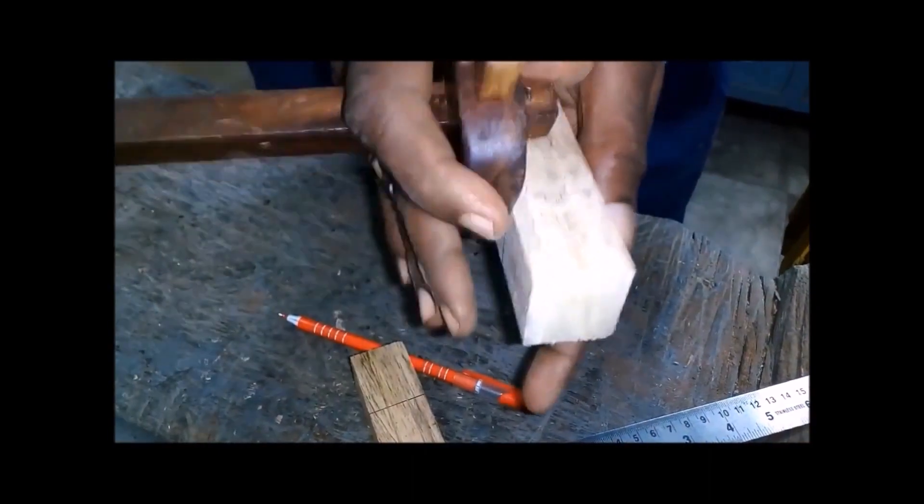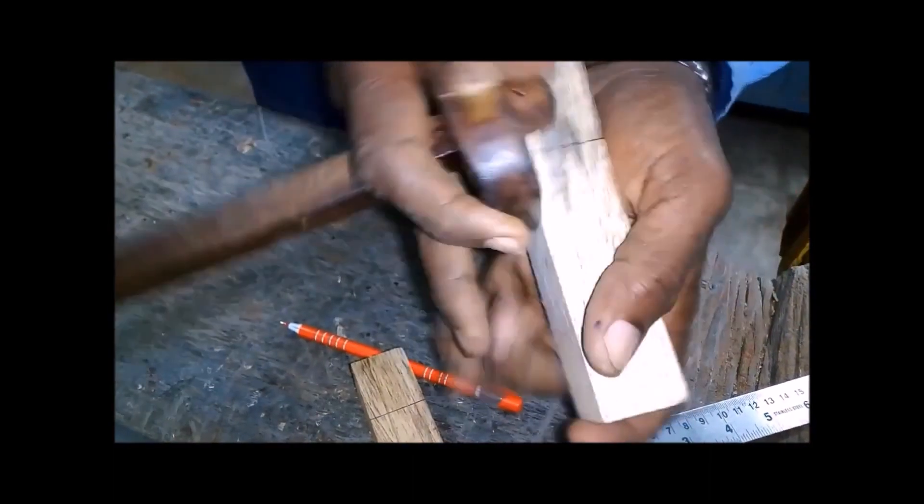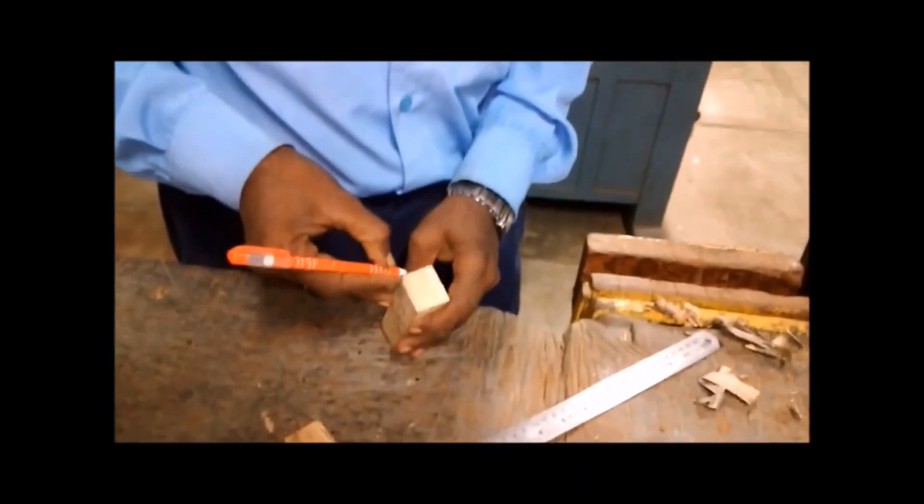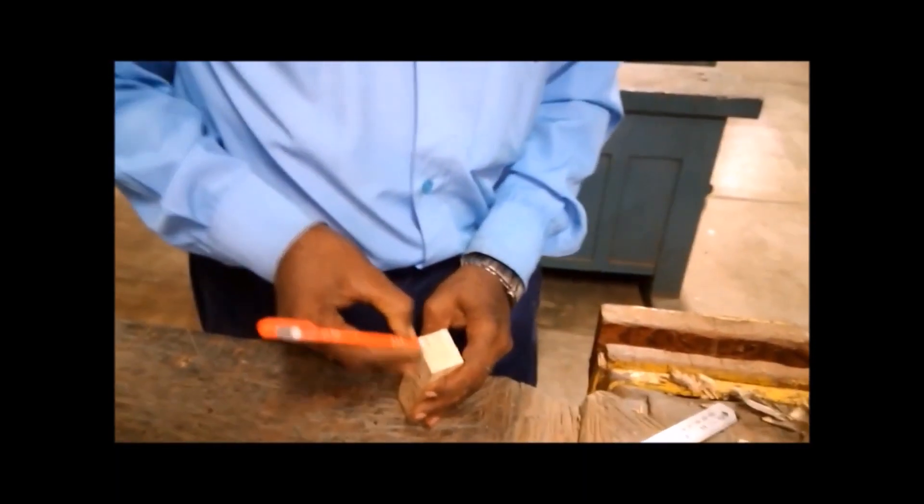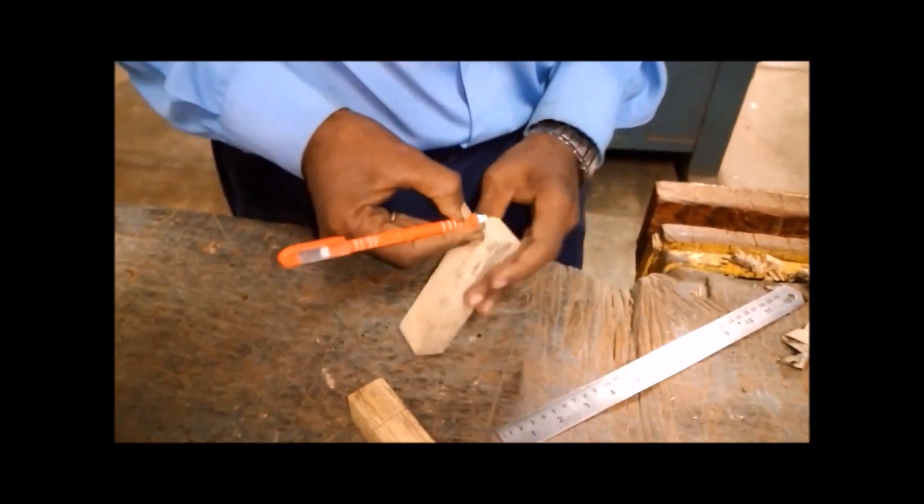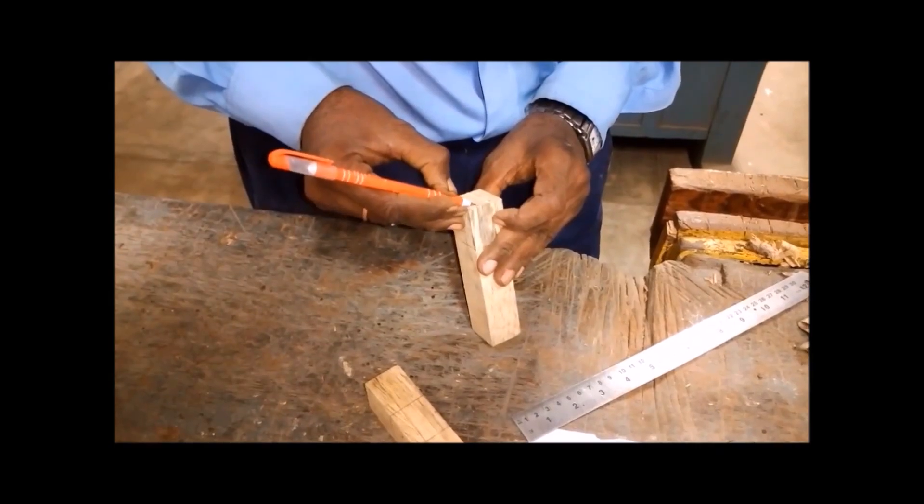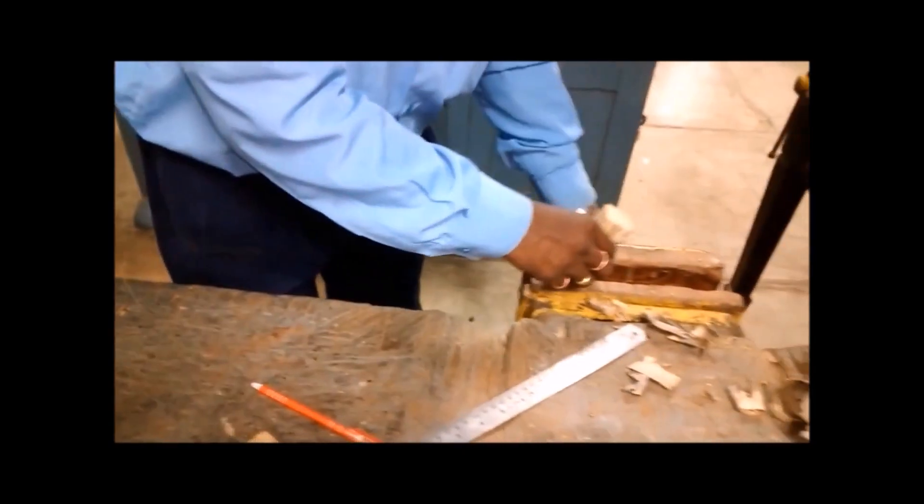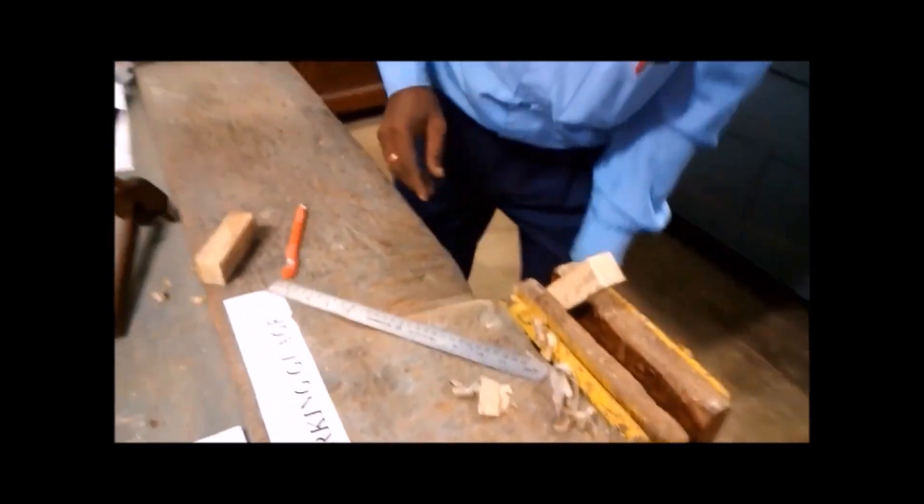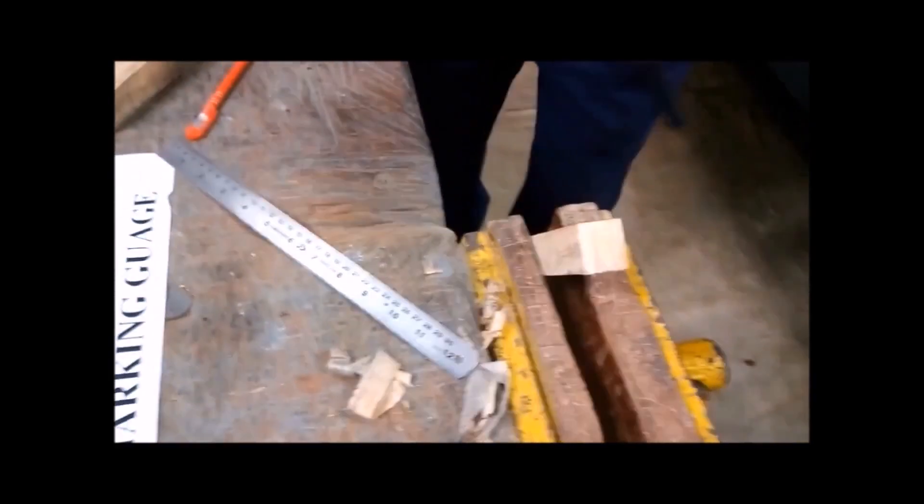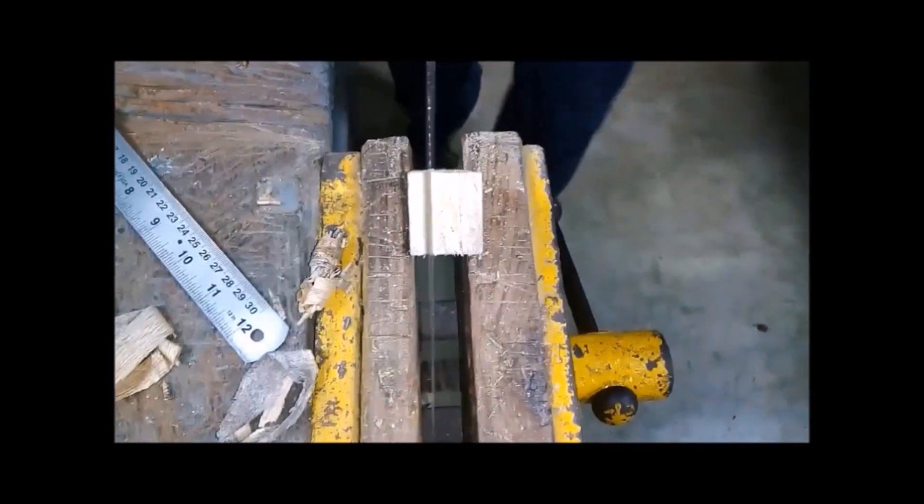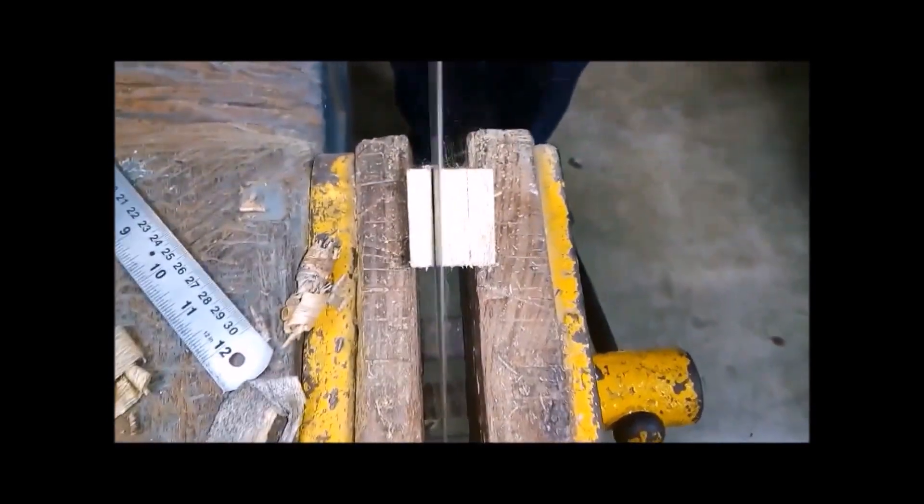For other piece also we are doing the same. Now we are going to fix this 125 mm length mortise member in a vise. The end is also marked into three equal parts by extending the lines with the help of marking gauge. So that we can easily remove the 9 mm material at the center portion to make mortise.